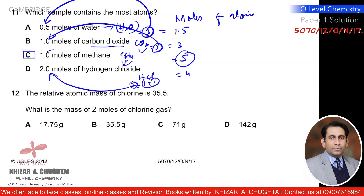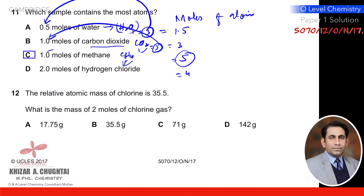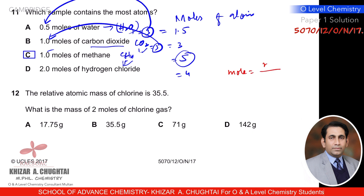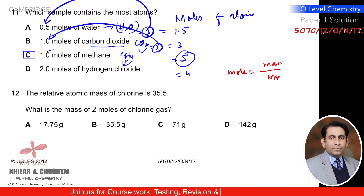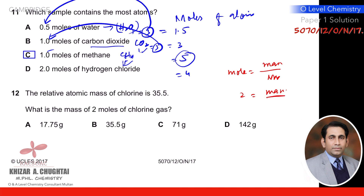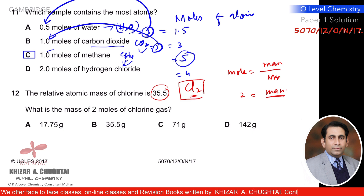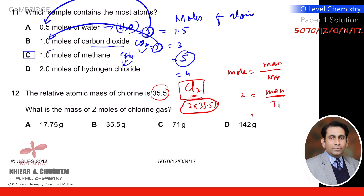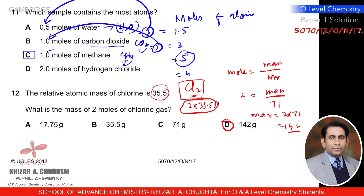Question twelve: the relative atomic mass of chlorine is 35.5. What is the mass of 2 moles of chlorine gas Cl₂? Using moles = mass/Mr: Mr of Cl₂ = 2 × 35.5 = 71. Mass = 2 × 71 = 142 g. So D is the correct option.